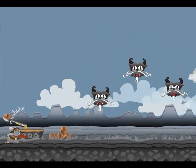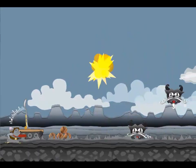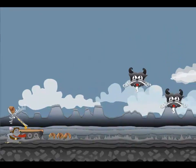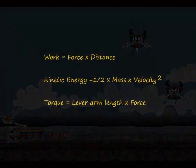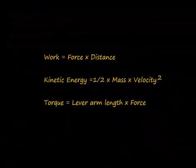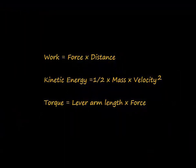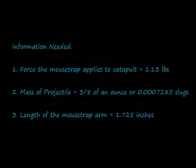Like any problem in real life, there's often many solutions to a given problem. However, using simple definitions of work and kinetic energy, along with the principles of torque and levers, it's possible to calculate the speed of a projectile being thrown from a mousetrap catapult. To get started, we need some basic information. We need to determine how much torque a tension spring, like the one on our mousetrap, can apply across a distance.